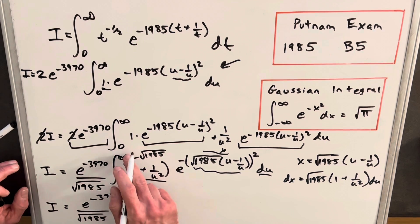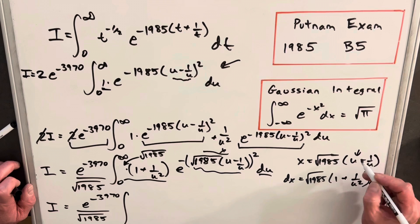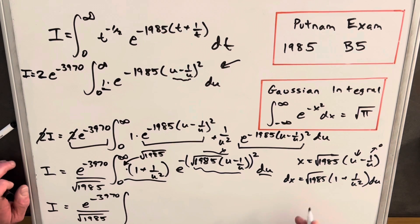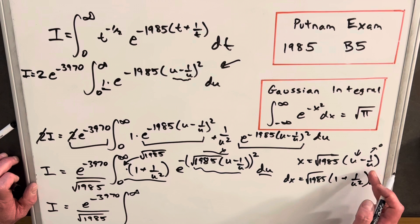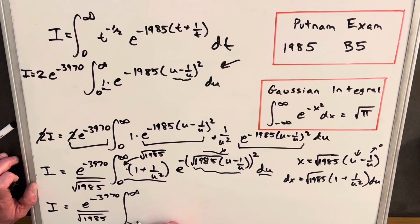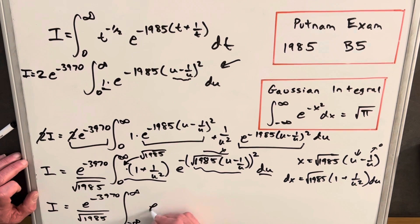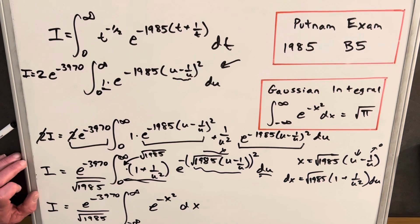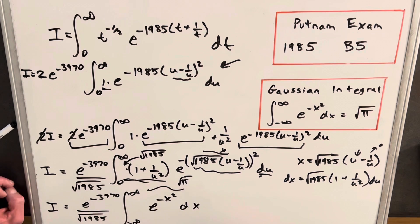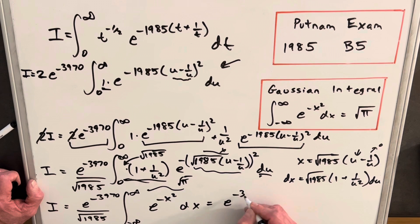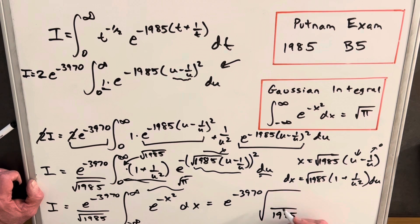We need to be careful with the bounds. Plugging in infinity, x goes to infinity. Plugging in 0, the u term vanishes and the 1/u term goes to infinity, so x goes to minus infinity. We now have e to the minus 3970 times 1 over square root of 1985 times the integral from minus infinity to infinity of e to the minus x squared dx. We know that integral equals square root of pi. So our final answer is e to the minus 3970 times square root of pi over square root of 1985.